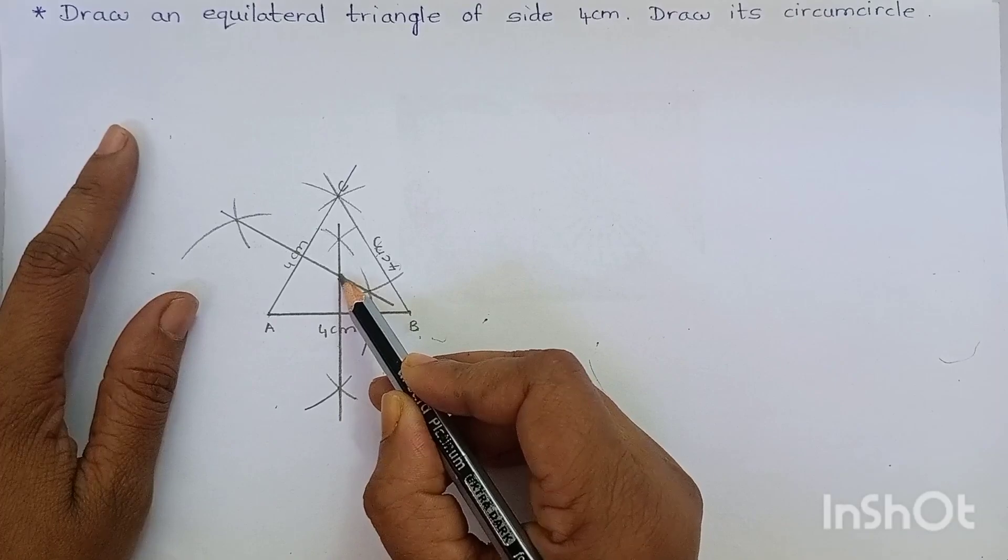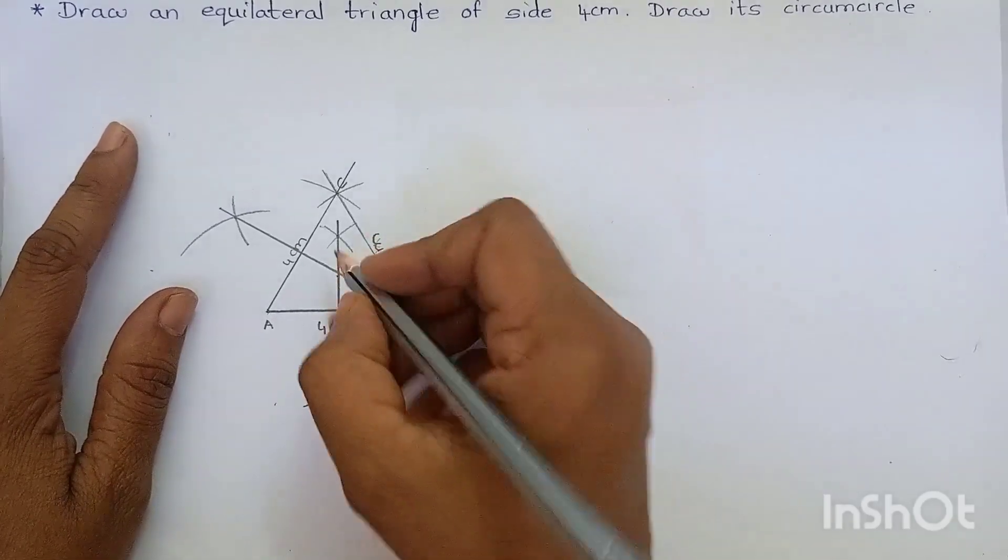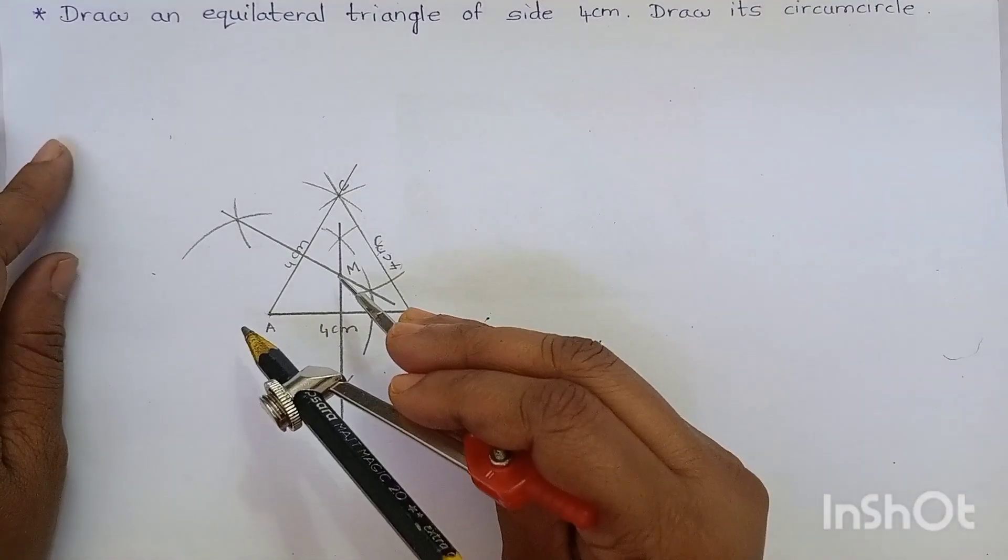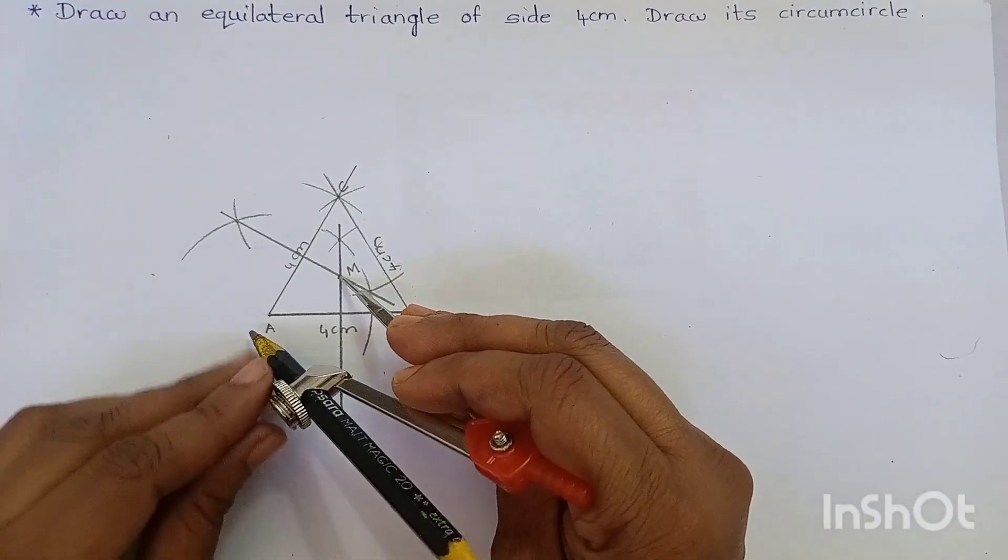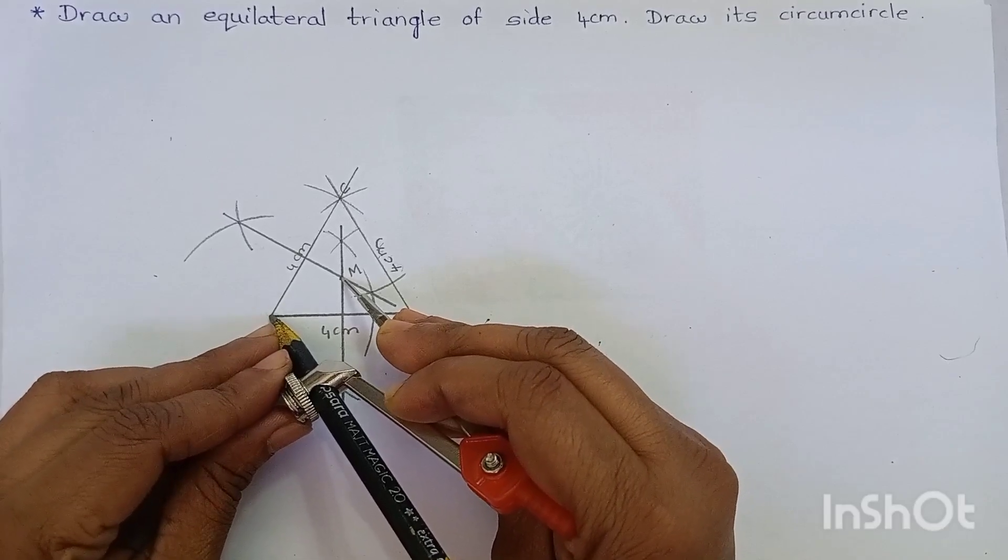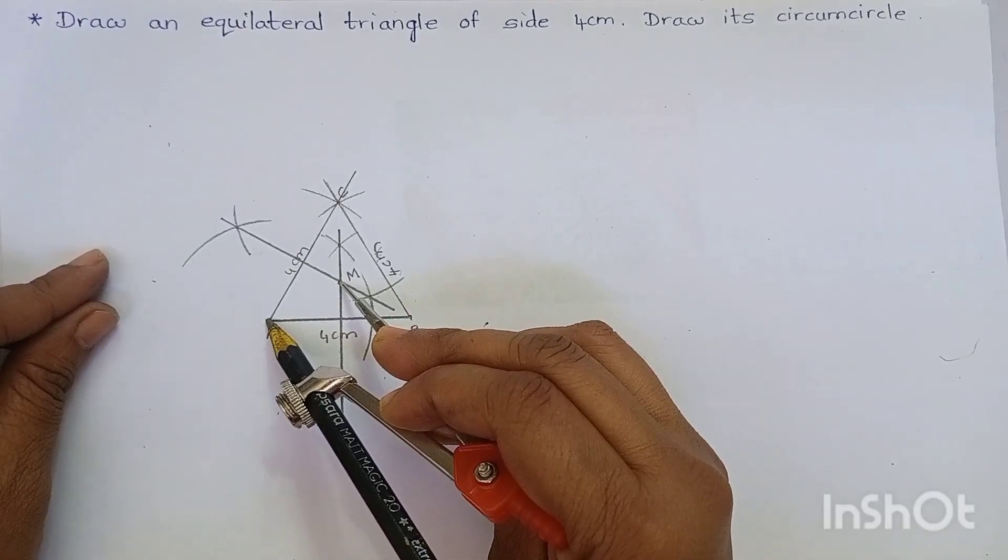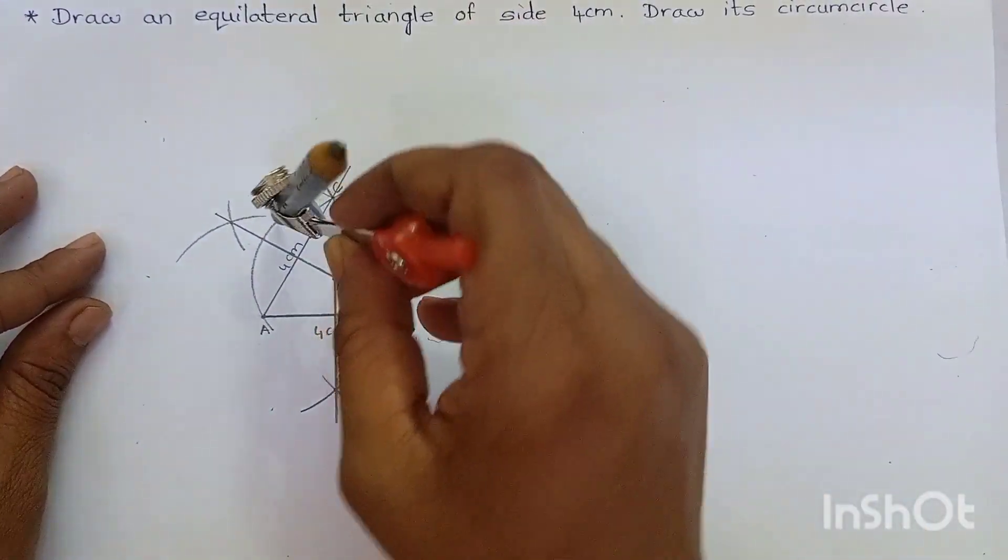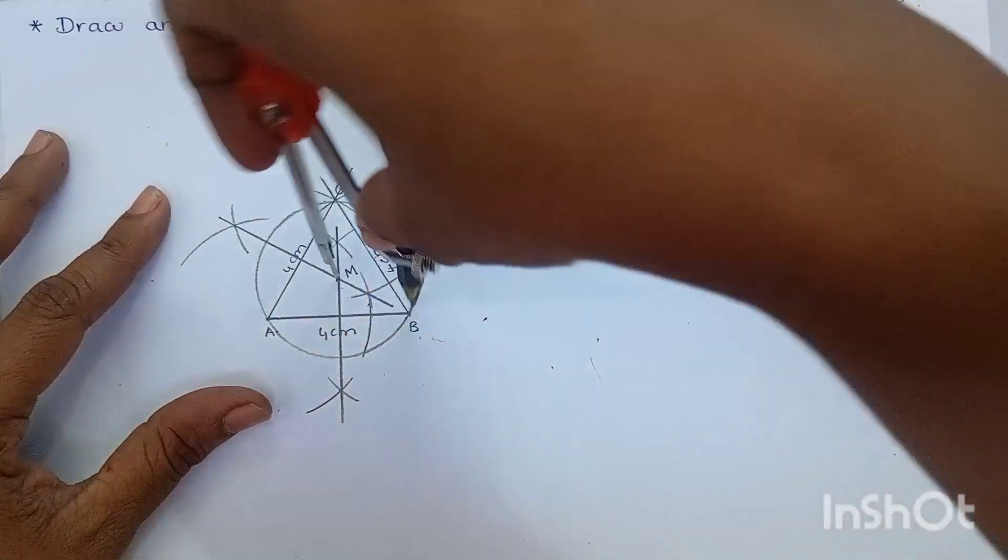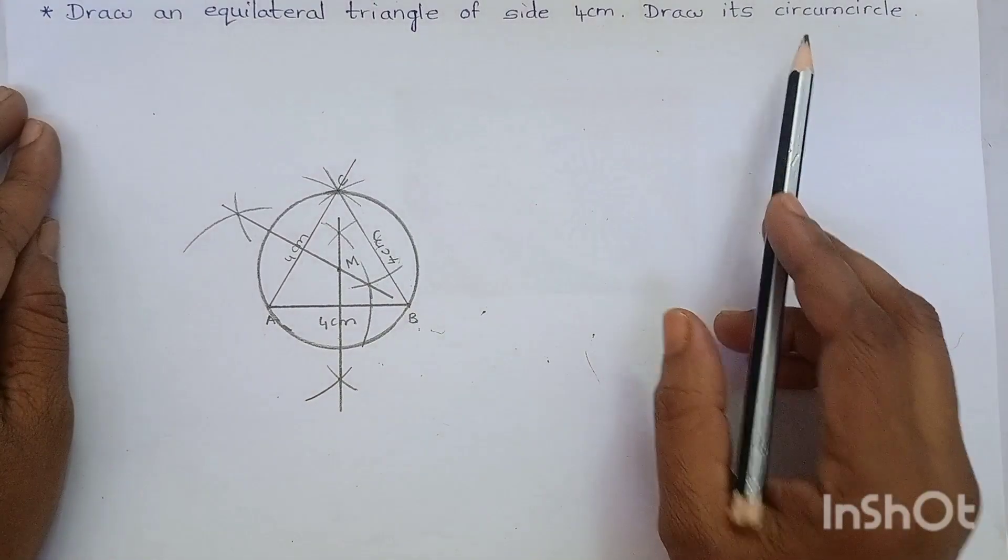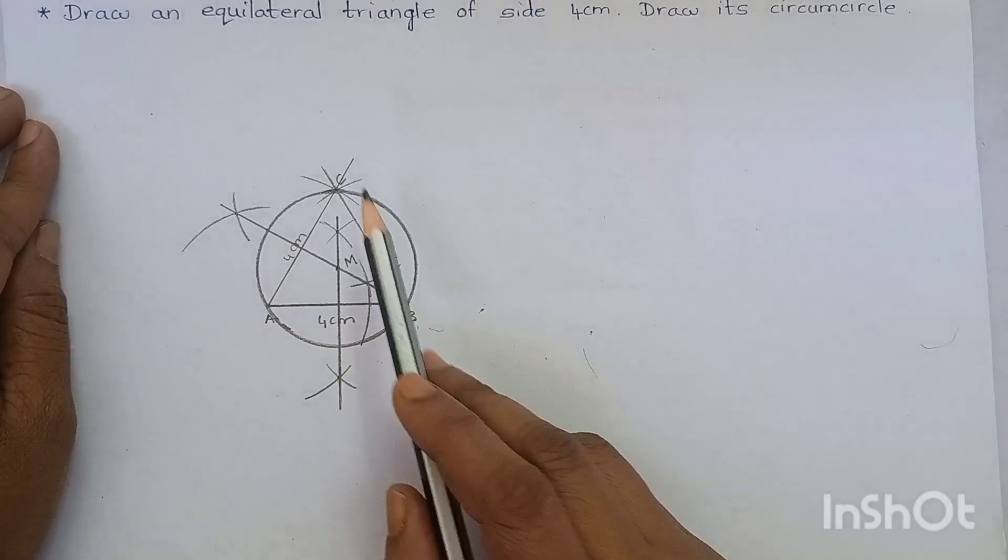Mark this point as M. Now, by taking AM as radius, draw a circle. You can see that we have drawn a circumcircle to the triangle ABC.